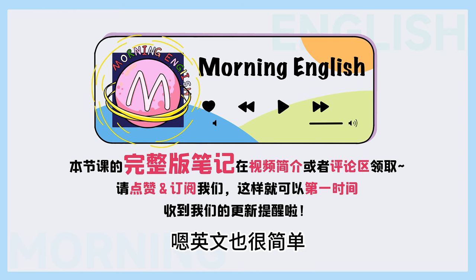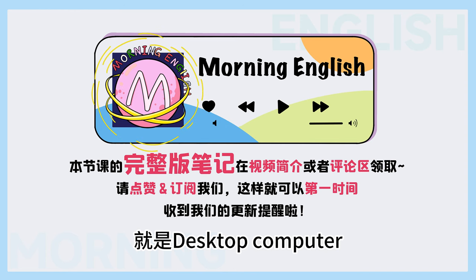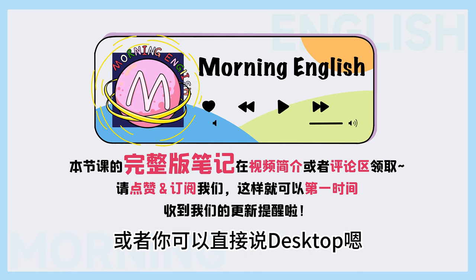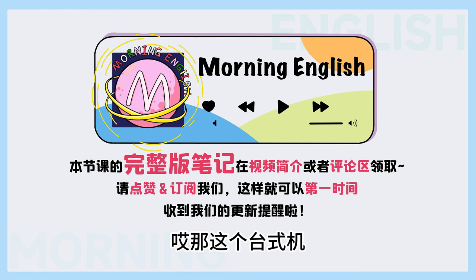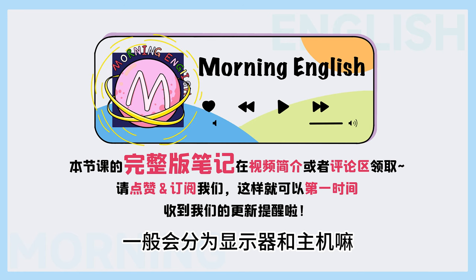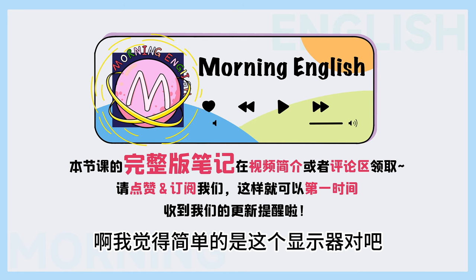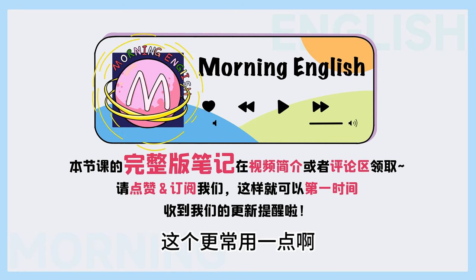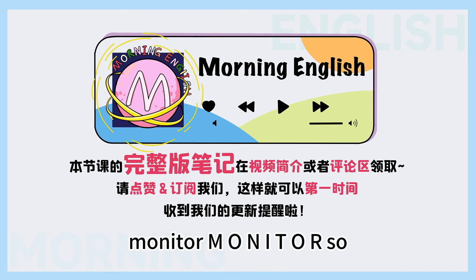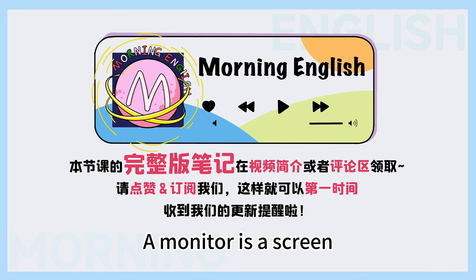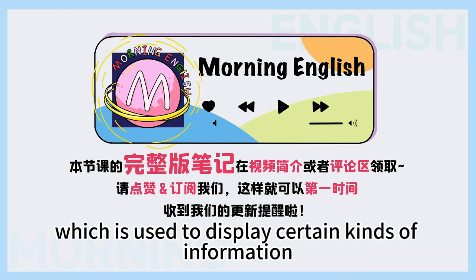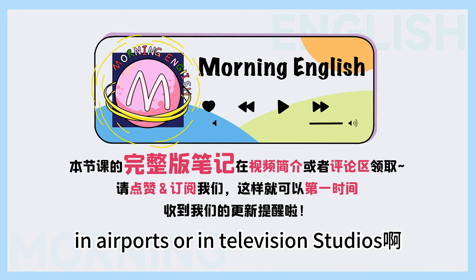那跟这个笔记本电脑对应的就是台式电脑了，英文也很简单，就是desktop computer，或者你可以直接说desktop. 那这个台式机一般会分为显示器和主机吗？那这两个要怎么表达呢？我觉得简单的是这个显示器，更常用一点的呢是monitor, M-O-N-I-T-O-R. So a monitor is a screen which is used to display certain kinds of information, for example on a computer, in airports, or in television studios.